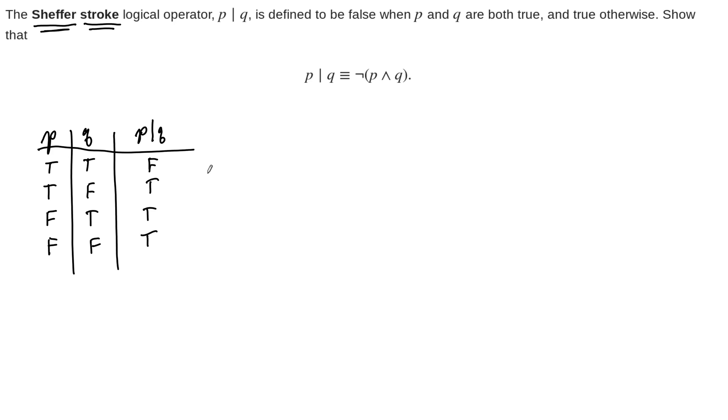Now, we're asked to show in this example that this Sheffer stroke truth value, this column here, is, well, that the operation of the Sheffer stroke is logically equivalent to the negation of the conjunction of P and Q. So let's build this one by using the definition of logical equivalence. So the definition of logical equivalence that we're going to show is that the biconditional between these two statements is a tautology. So that's what we're going to end up getting to because that's the definition of a logical equivalence.